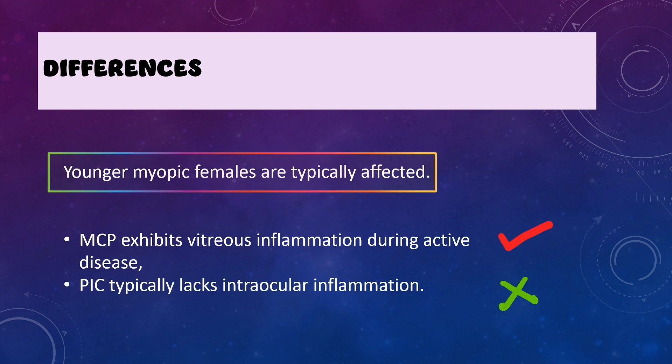What are the differences between the two? Both conditions affect younger myopic females. However, in multifocal choroiditis and panuveitis, we will see vitreous inflammation during the active disease. In punctate inner choroidopathy, vitreous inflammation or intraocular inflammation is usually absent.